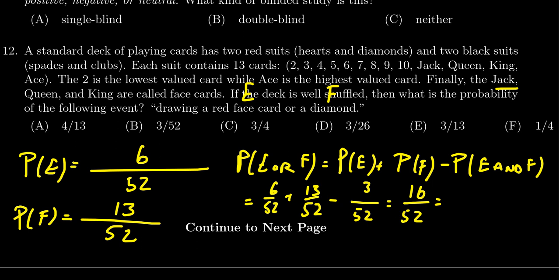16 and 52 are both divisible by 4. 4 goes into 16 four times, 4 goes into 52 thirteen times. So we see that the correct probability is going to be 4 out of 13, which gives us choice A.